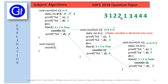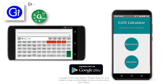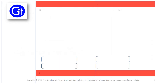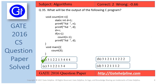The entire function execution is now complete. Since count is a void function it returns nothing to main. All values were printed inside the functions. The final output of this program is: 3 1 2 2 1 3 4 4 4, which corresponds to option A. So the answer to this question is option A.